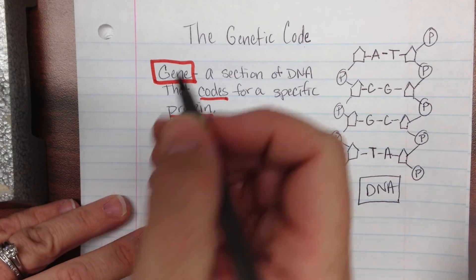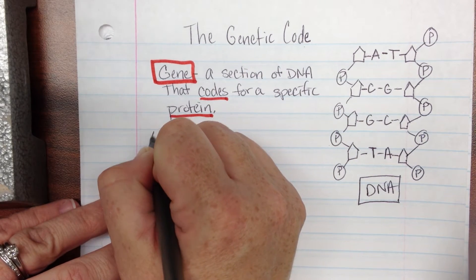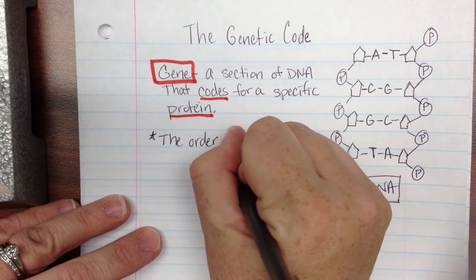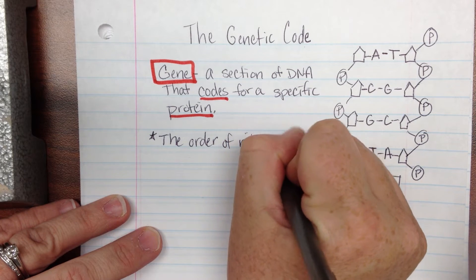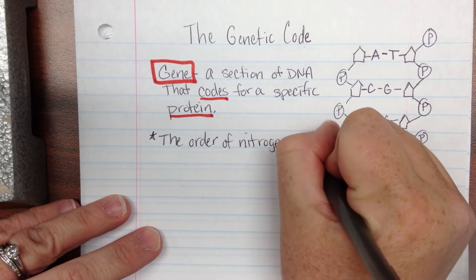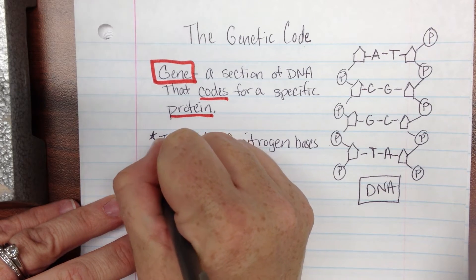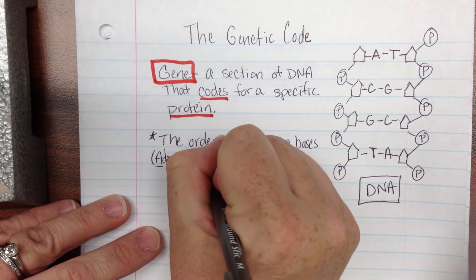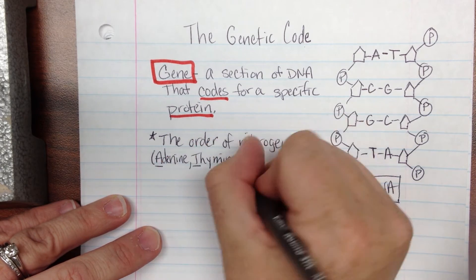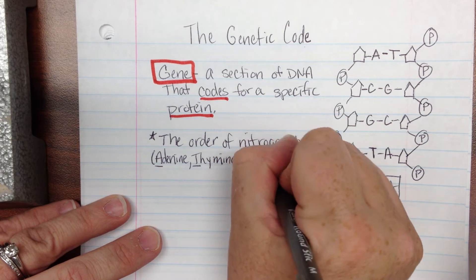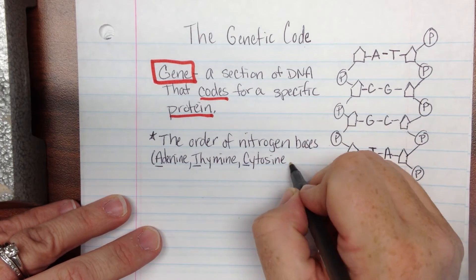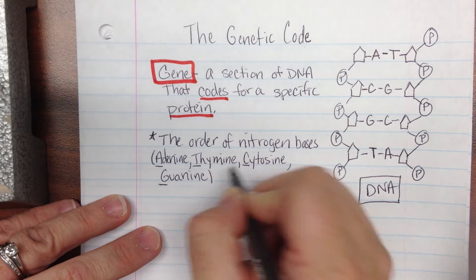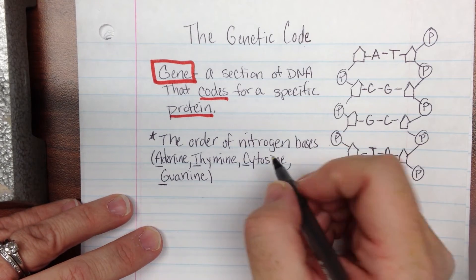So just a little bit more about that code. Let's make a note that, I'm going to put a little star beside it, the order of nitrogen bases. And again, we can remember that's our adenine or A, thymine T, cytosine C, and guanine, our G. So the order of these bases along the gene...